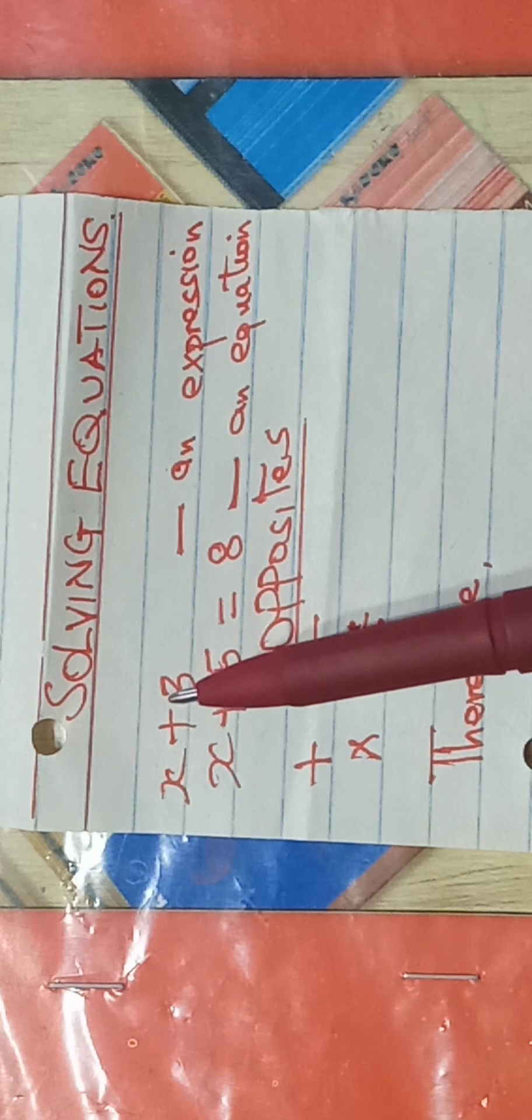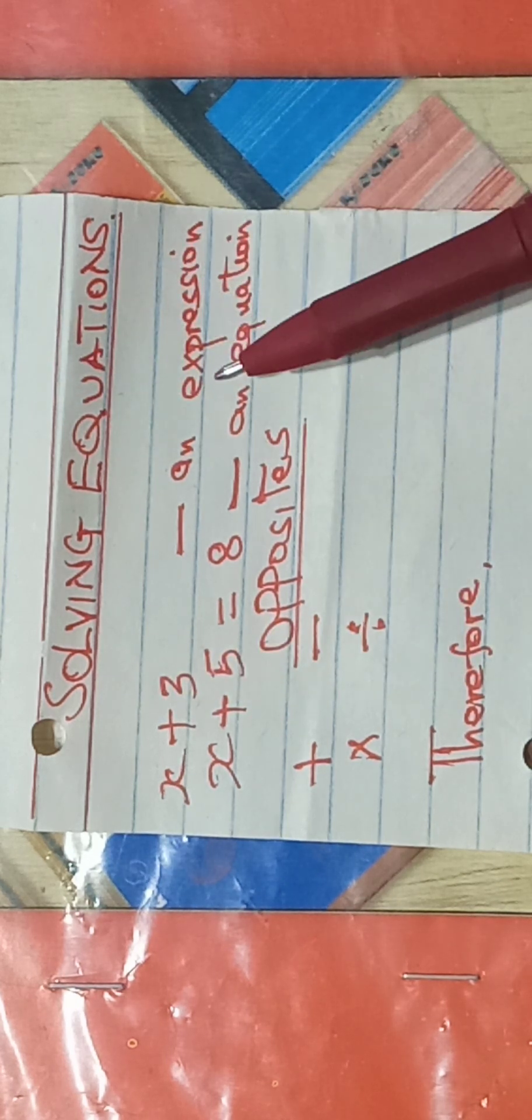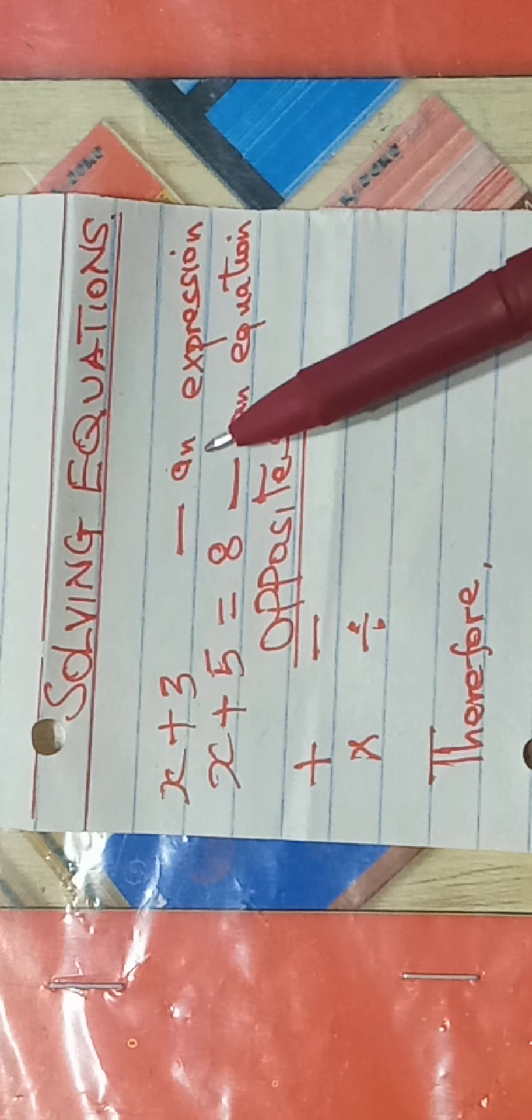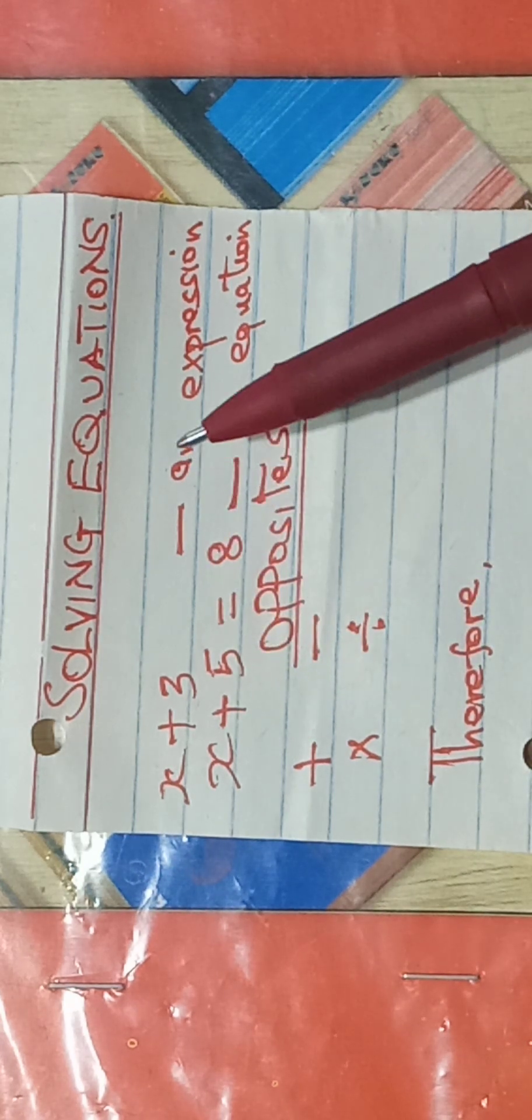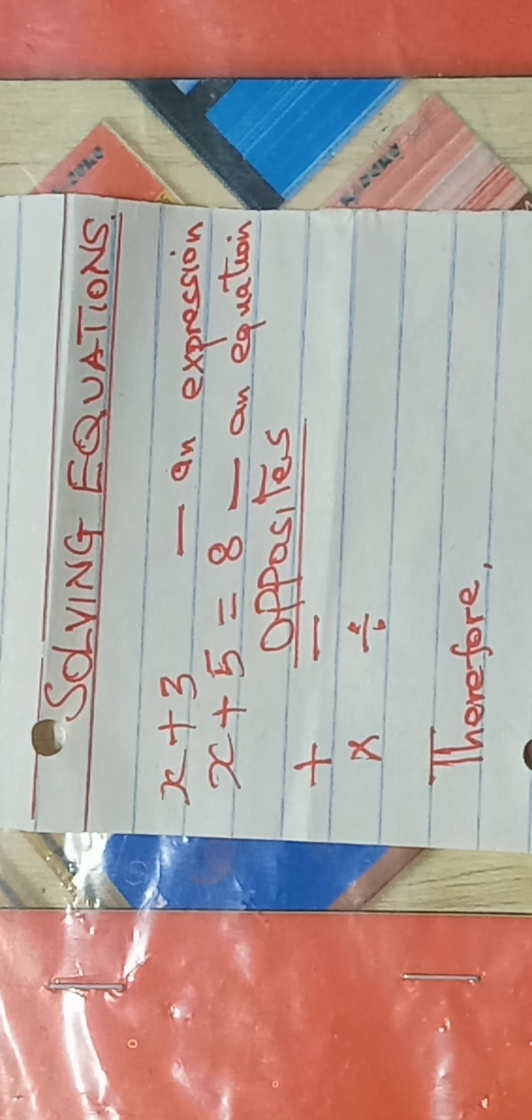If, for example, I have x plus 3, without an equal sign and a number after an equal sign, that's what we call in algebra as an expression. If we have x plus 5 is equal to 8, this is what we call an equation. So this is what we are going to deal with.